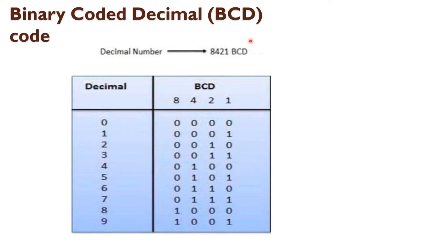BCD code is one of the weighted codes. What is a weighted code? Each position of the number represents a specific weight. It is very similar to the decimal system. We need to remember the binary equivalent of decimal numbers 0 to 9 only. One disadvantage of BCD code is that addition and subtraction follow different rules — BCD arithmetic is a little more complicated.